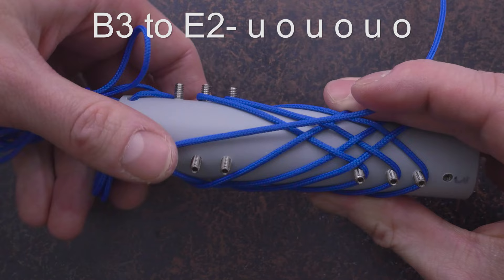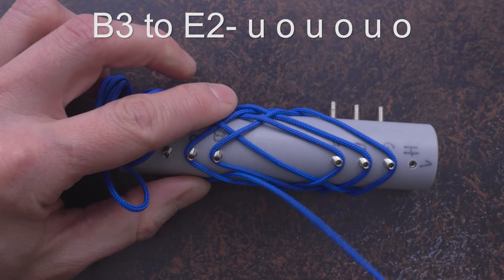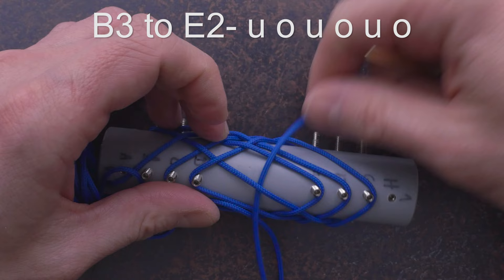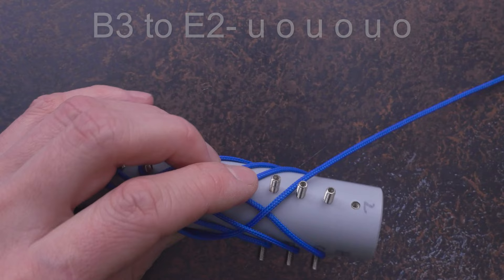We move to E2, starting under, then over, under over, under over, reaching E2.